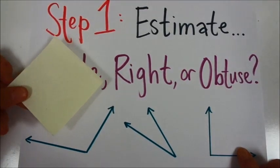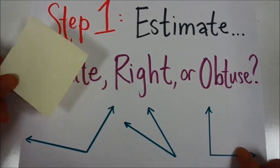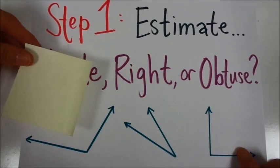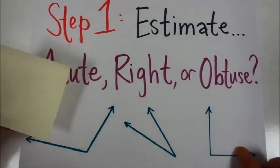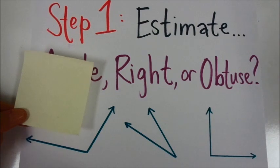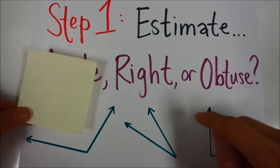Remember that you have a tool, a very simple tool, that you can use to help you estimate. A post-it note, or a note card, or even the corner of your paper can help you compare an angle that you have to 90 degrees.